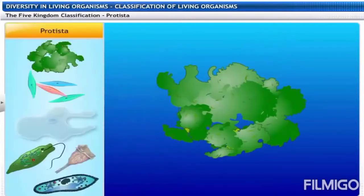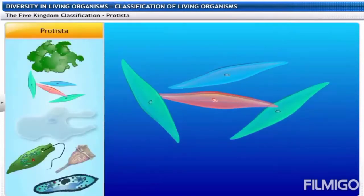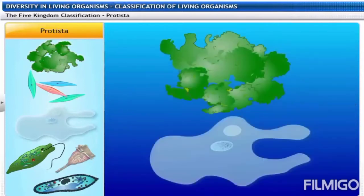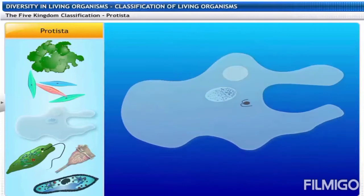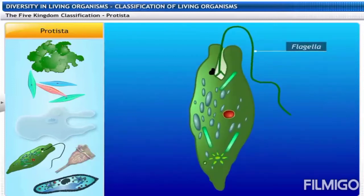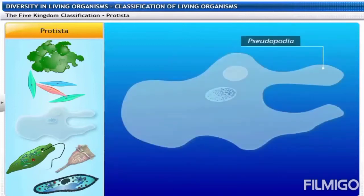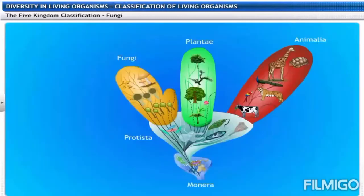Members of kingdom Protista are generally unicellular and eukaryotic. They include algae, protozoans, diatoms, etc. Protista includes both plant-like and animal-like organisms, and the mode of nutrition can be autotrophic or heterotrophic. They are the simplest form of eukaryotes, having a well-defined nucleus and membrane-bound organelles. Some Protista have flagella, whereas some others have cilia, and some have pseudopodia.